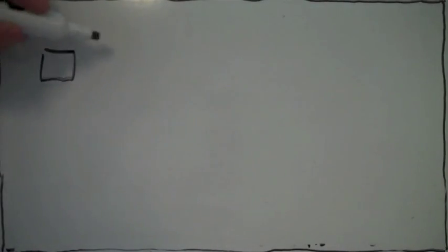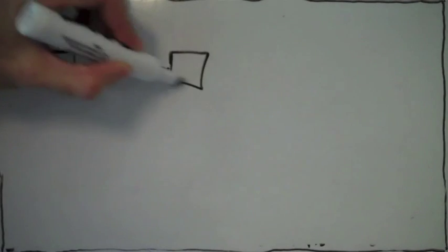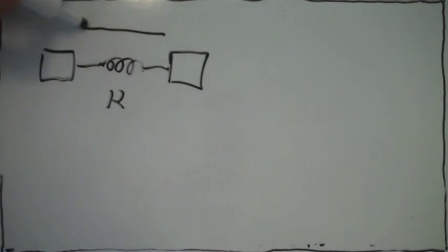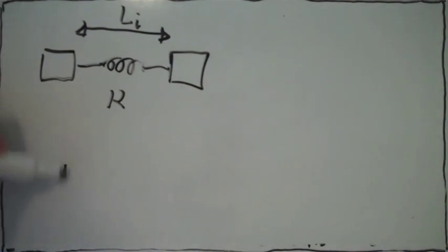In this problem, we have two blocks connected with a spring. The constant of the spring is k, and the length of the spring is li. That's the initial length.